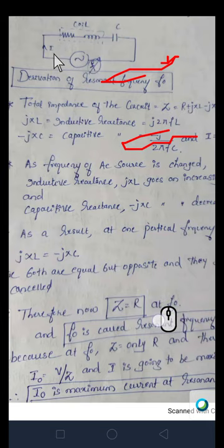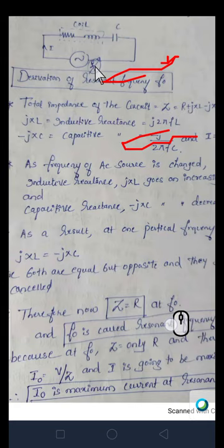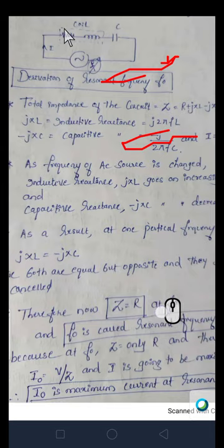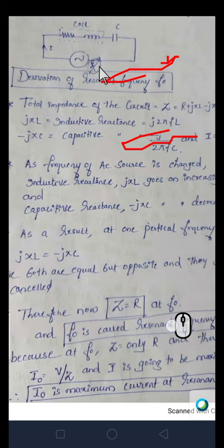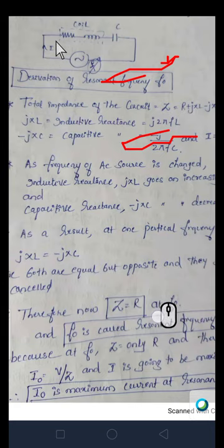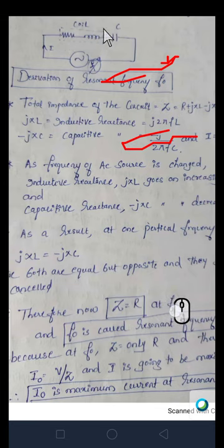When the opposition is decreased, the flow of current is maximum. That maximum current I₀ is obtained at frequency F₀. Why is the current maximum? Because the total impedance of the circuit becomes simply R instead of R + jXL − jXC — it reduces to only R at frequency F₀ due to the cancellation of the two reactances.